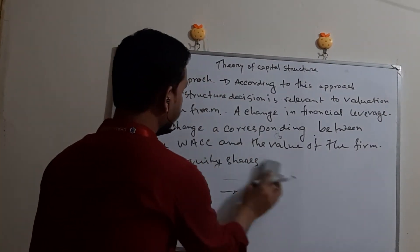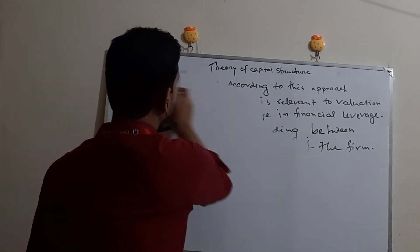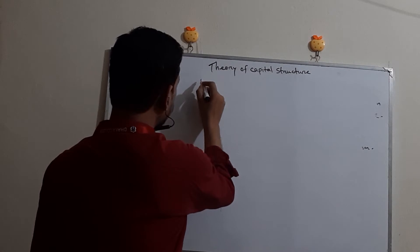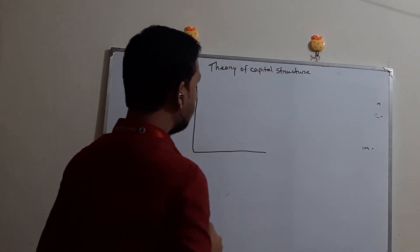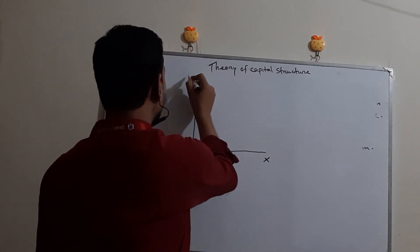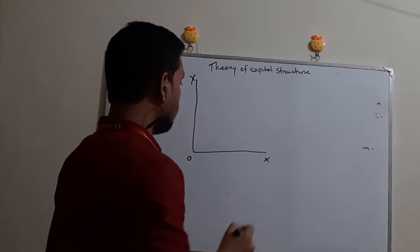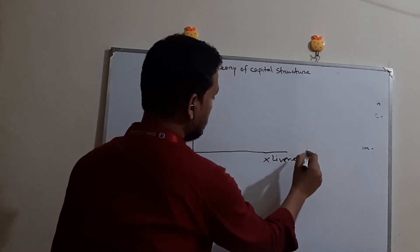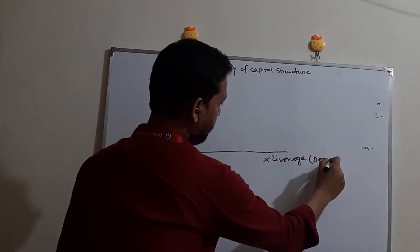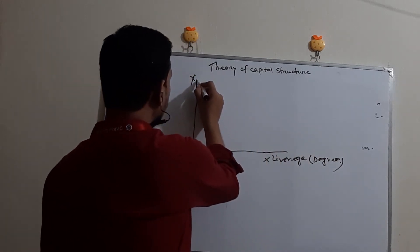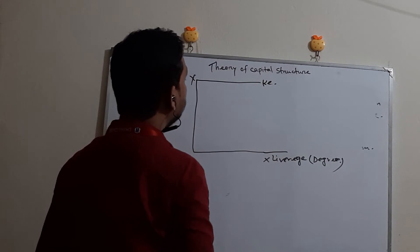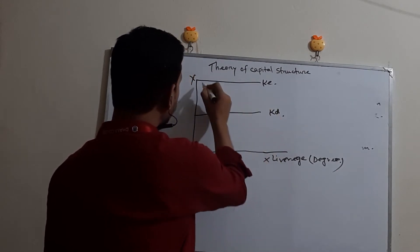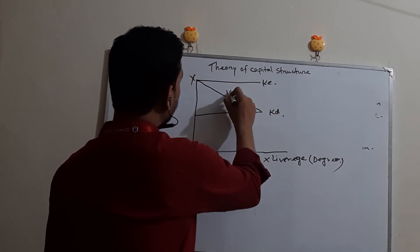Dear students, let's see the diagram. It is a diagram with OX and OY axes. The OX axis is called leverage or degree of leverage. The OY axis shows cost of equity, cost of debt line, and the overall cost of capital.